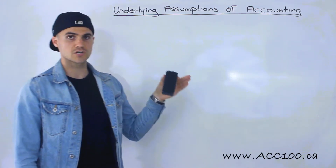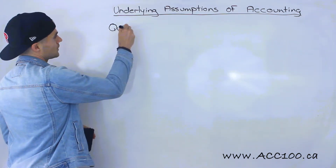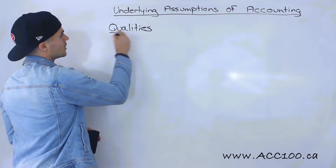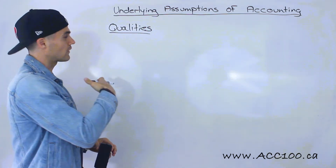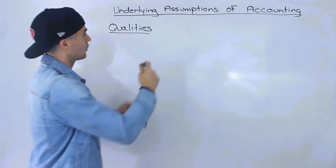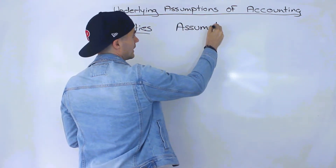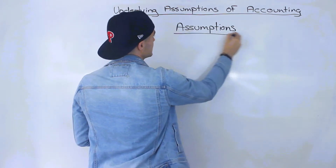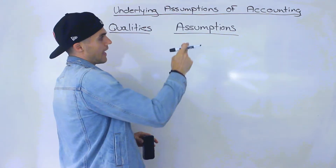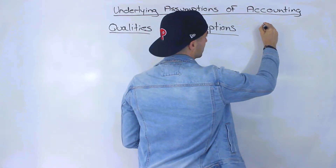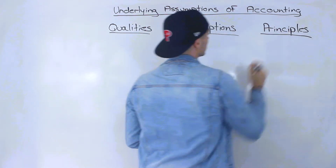Before getting into the assumptions, I want to start off by differentiating between what qualities are — which we've already gone over, the six qualitative characteristics of accounting in the previous section — assumptions, which is what we're going to be doing in this video or this next set of videos, and then principles as well, which is what we'll be covering for the rest of the course.